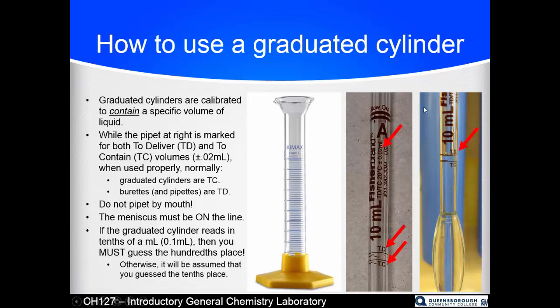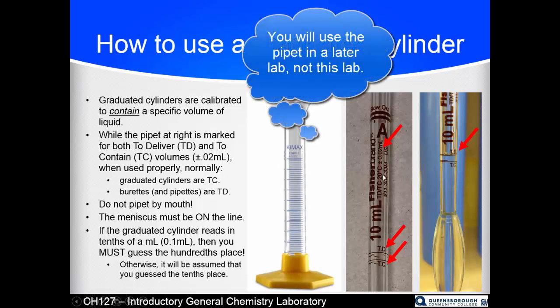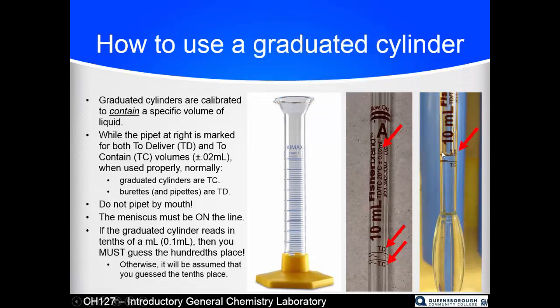The pipette, this thing on the right-hand side, typically is a to-deliver, TD, volume measuring device. You fill it up to the 10-milliliter line, and this is plus or minus 0.02 milliliters. This is really, really precise. The graduated cylinder is slightly less precise than that. If you let it drain on its own, the pipette will deliver 10.00 milliliters. This one happens to also have a to-contain line, but generally speaking, you do not blow out pipettes, and therefore they are almost always to-deliver volume measuring devices.